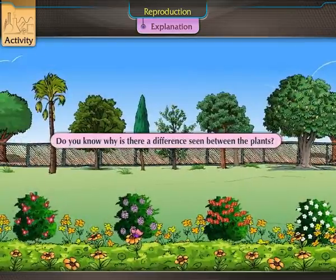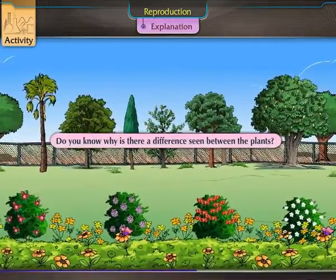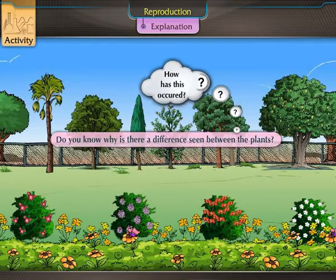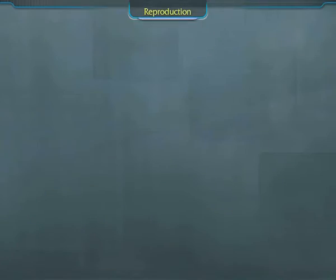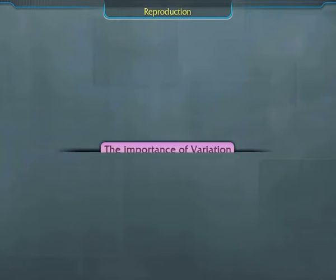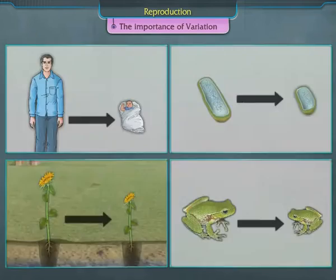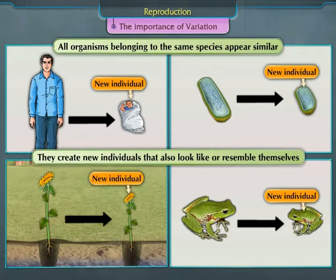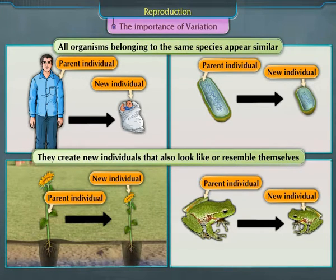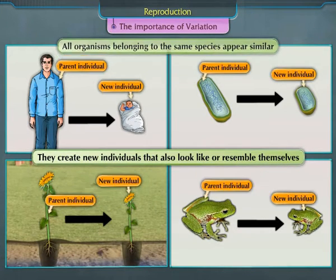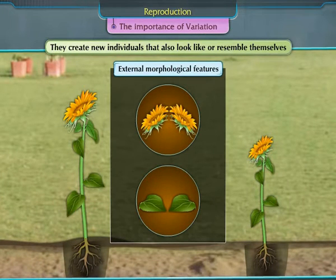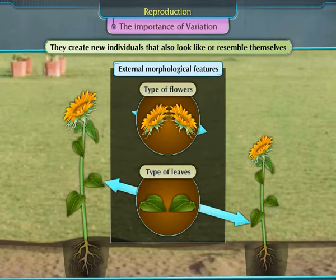Why is there a difference seen between the plants? All organisms belonging to the same species appear similar and create new individuals that also resemble themselves. This is very clear from their external morphological features such as the type of leaves, the type of flowers, etc.